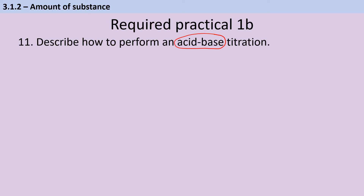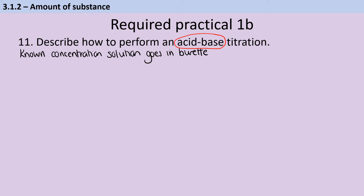The first step in an acid-base titration is deciding which solution goes where. Normally, the solution added to the burette is the one whose concentration you know but whose volume you don't — you determine that through the titration. Before starting, you need to be sure the burette doesn't contain any impurities, so it needs rinsing. You can't rinse it with water as that would dilute the solution, so instead you rinse it with more of that same solution — if you're titrating with sodium hydroxide, you rinse with sodium hydroxide.